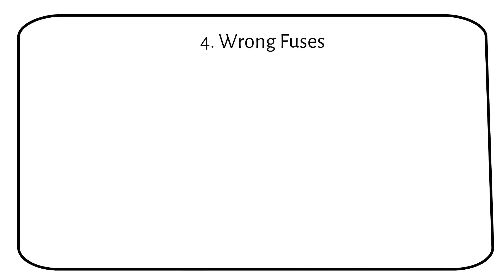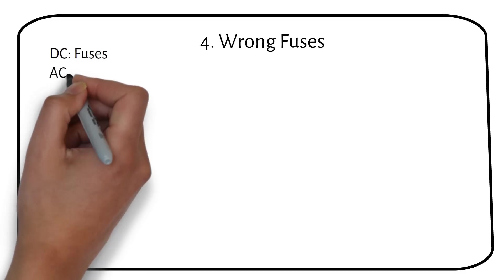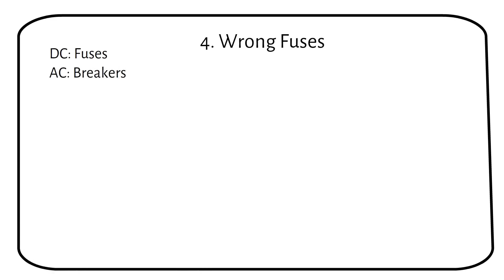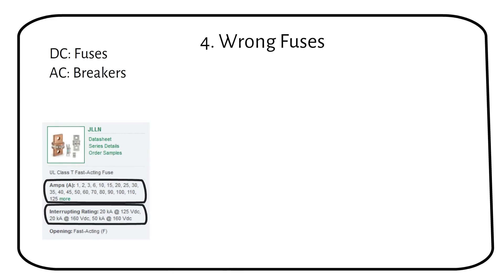Mistake number 4 is using the wrong fuses. In DC systems, we use fuses while AC systems typically use breakers. Each fuse is rated for a specific current and interrupting current capacity at specific voltages or ICC in short.